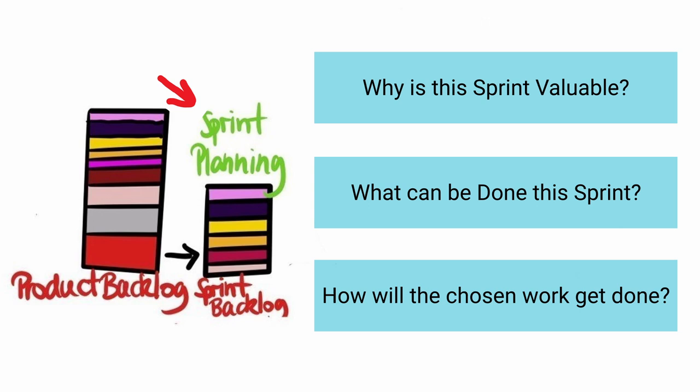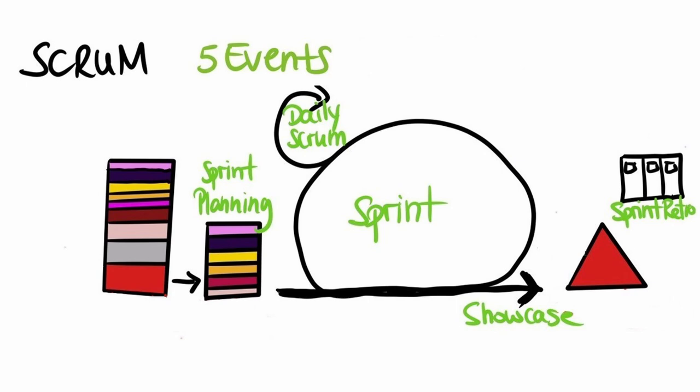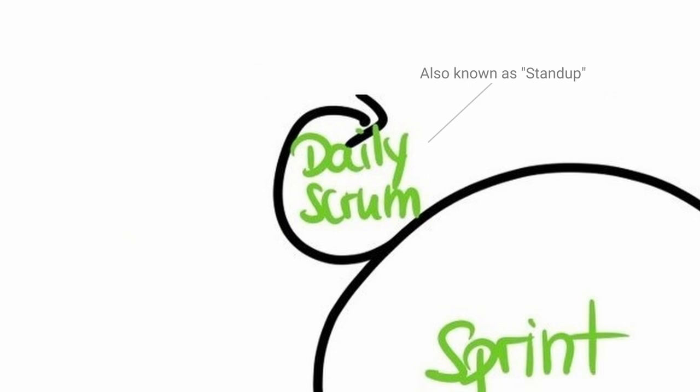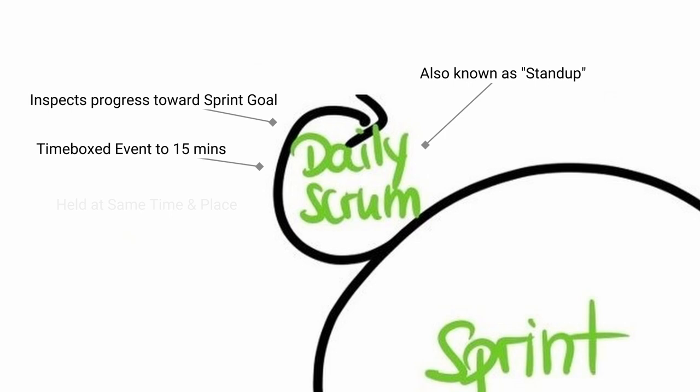Daily Scrum. The purpose of the Daily Scrum is to inspect progress towards the Sprint goal and adapt the Sprint backlog as necessary, adjusting the upcoming planned work. It is a time-boxed event, ideally 15 minutes, held at the same time and place to reduce complexity. Daily Scrums improve communication, identify impediments and promote quick decision making. This is the team's meeting and should not be seen as a status report to management.